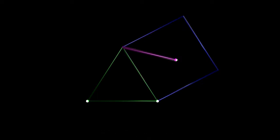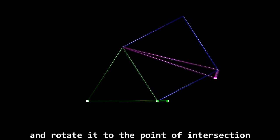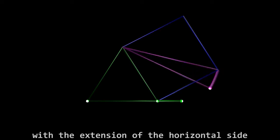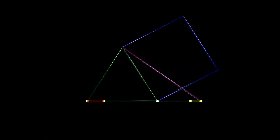And rotate it to the point of intersection with the extension of the horizontal side. We thus obtain a golden segment.